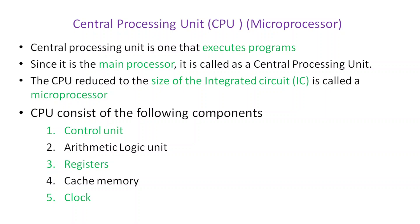The CPU executes programs. When you reduce the size of the CPU to that of a small chip, it is called a microprocessor — a CPU reduced to the size of an integrated circuit. The CPU consists of: control unit, arithmetic logic unit, registers, cache memory, and clock.